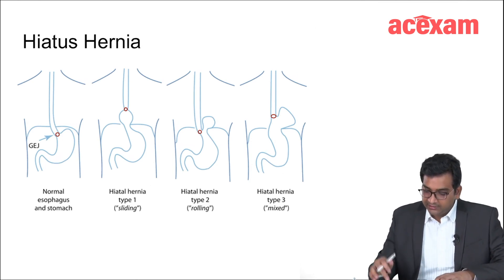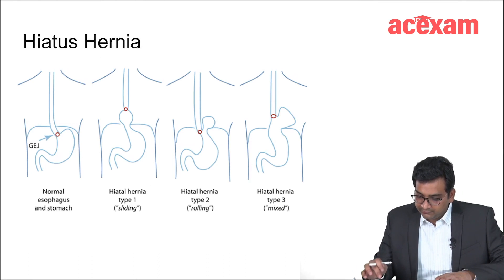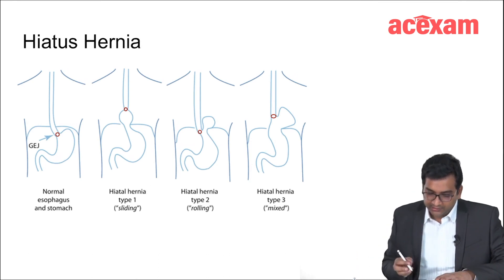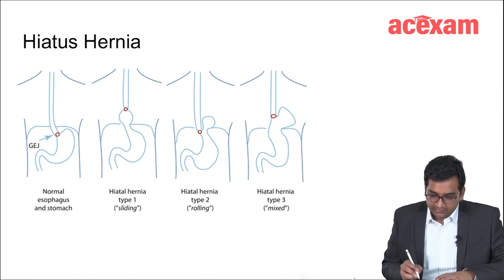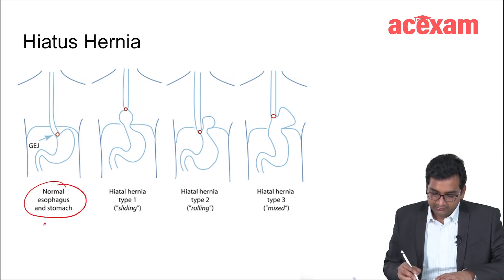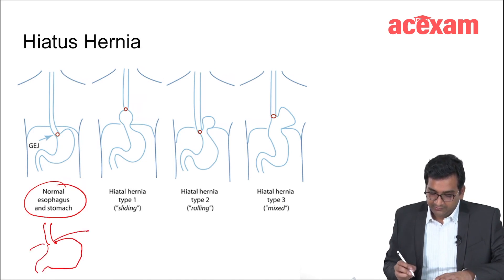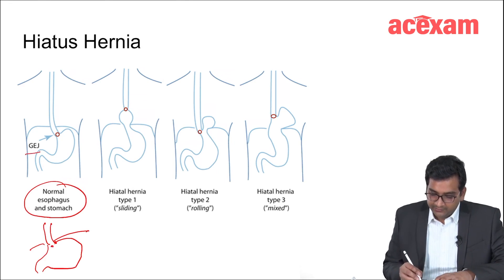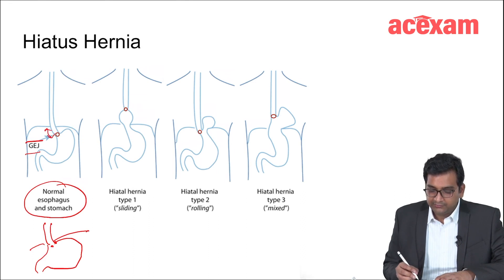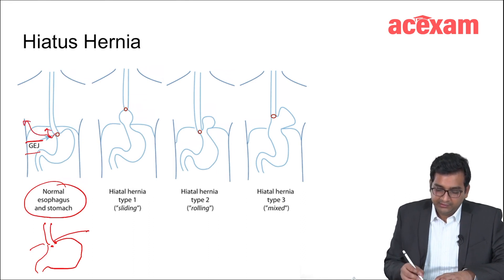As we can see here, this is the first part — normal esophagus and stomach. There is a diaphragm. Normally, the GE junction is present below the diaphragm, and there is some portion of abdominal esophagus which is present. This abdominal esophagus generally is 2 centimeters in length.